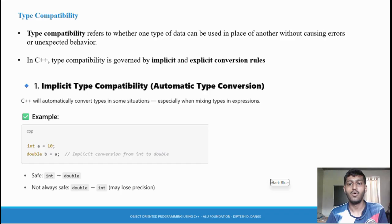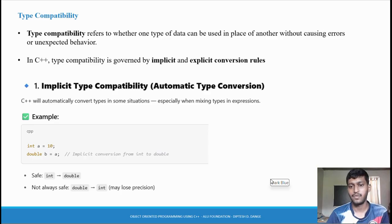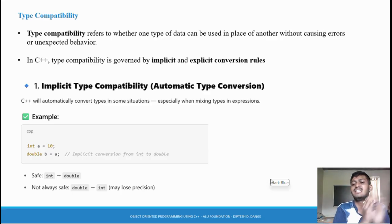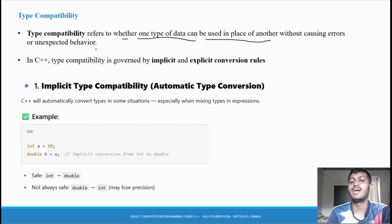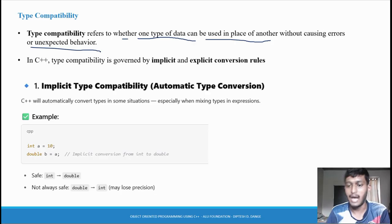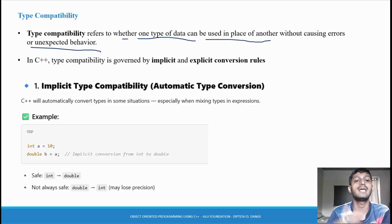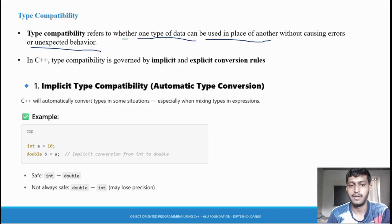In programming terms, when we change one data type with another data type and no error occurs and the program's behavior does not change, then we say it is compatible. If an error occurs after changing, it is not compatible. The behavior of the program means: if it was doing a plus b before, it still gives the addition result the same way. This is type compatibility.